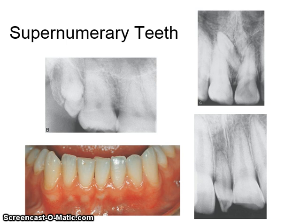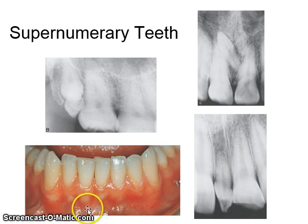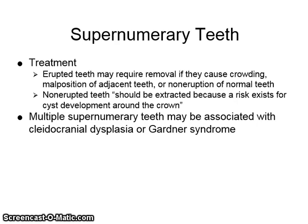Here are some pictures of supernumerary teeth, including examples of the mesiodens. Treatment of supernumerary teeth: erupted teeth may require removal if they cause crowding, malposition of adjacent teeth, or non-eruption of normal teeth. Non-erupted teeth should be extracted because a risk exists for cyst development around the crown. Multiple supernumerary teeth may be associated with cleidocranial dysplasia or Gardner syndrome.